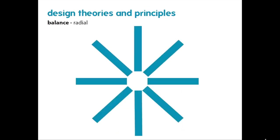Finally, radial balance is another great strategy. You can order things radially around a center point, which can be quite distinct from symmetrical or asymmetrical organization and can be really eye-catching.